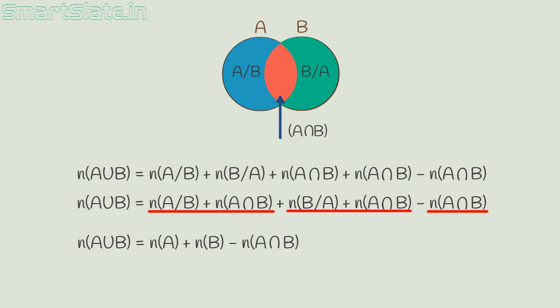Notice: if A and B are disjoint sets, then A intersection B is a null set. Disjoint means the sets do not have any common elements between them. So the equation becomes cardinality of A union B equals cardinality of A plus cardinality of B, since cardinality of A intersection B is 0.